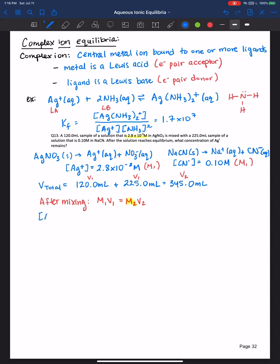So the silver ion concentration after mixing is equal to 9.7391 times 10 to the negative fourth molar. And the cyanide after mixing is equal to 6.5217 times 10 to the negative second molar.